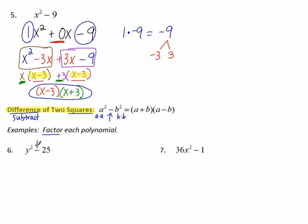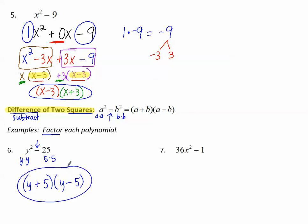Let's do these examples, factoring each polynomial the easy way using the difference of squares pattern. I see a difference — y squared is y times y, and 25 is 5 times 5. So the pattern gives two binomials: each has a y and a 5, one positive and one negative, so y plus 5 times y minus 5. For the last one, I see subtract — 36x squared is 6x times 6x, and 1 is 1 times 1. So two binomials: 6x plus 1 times 6x minus 1. And we're done.